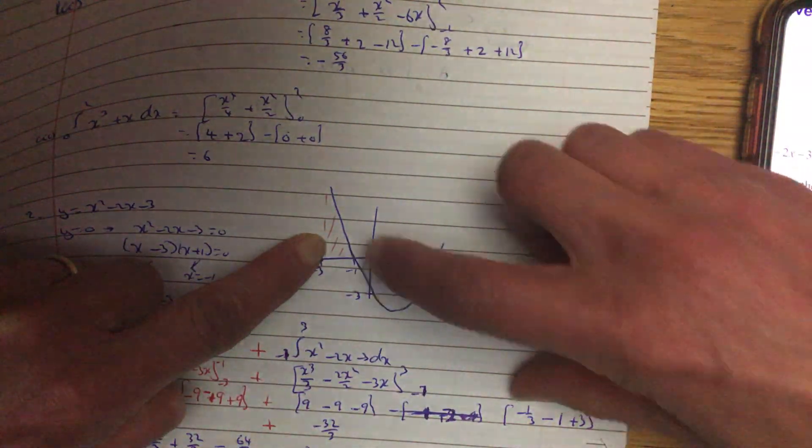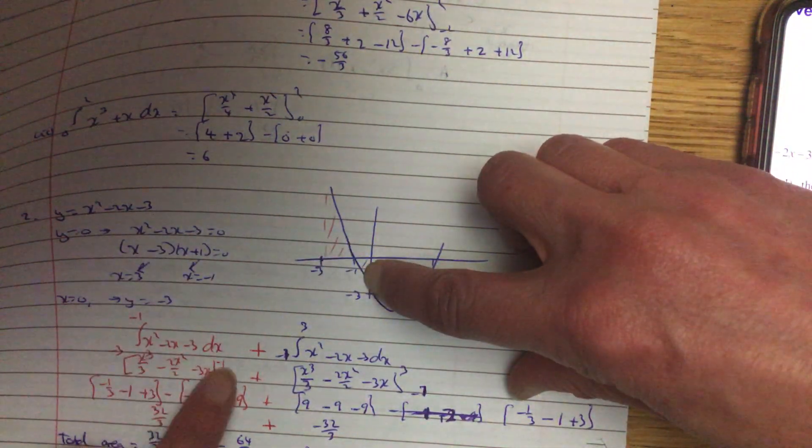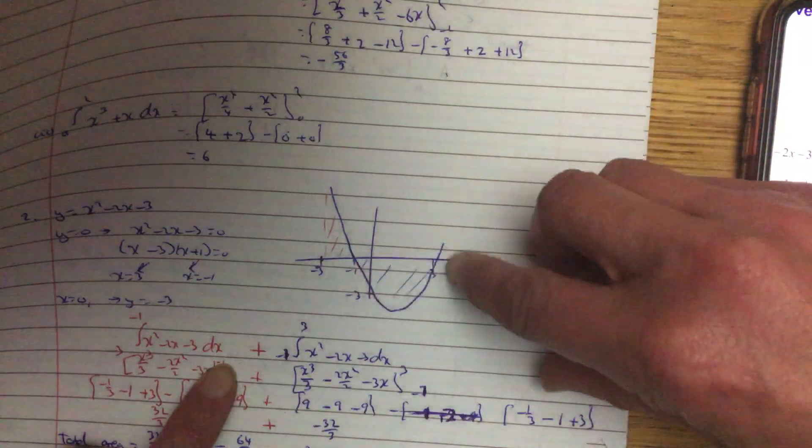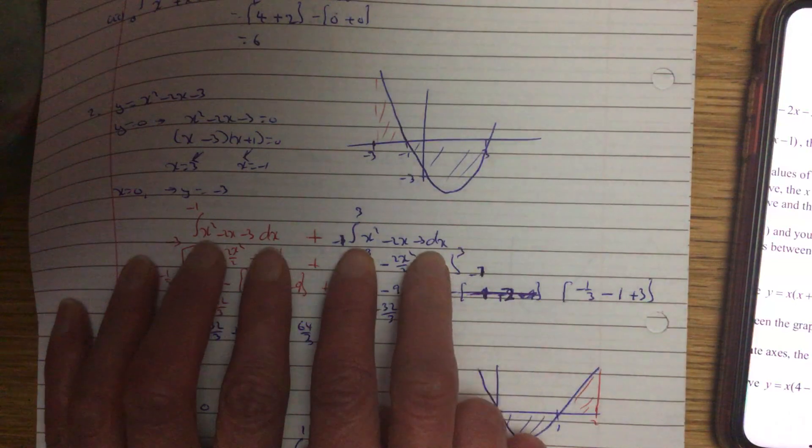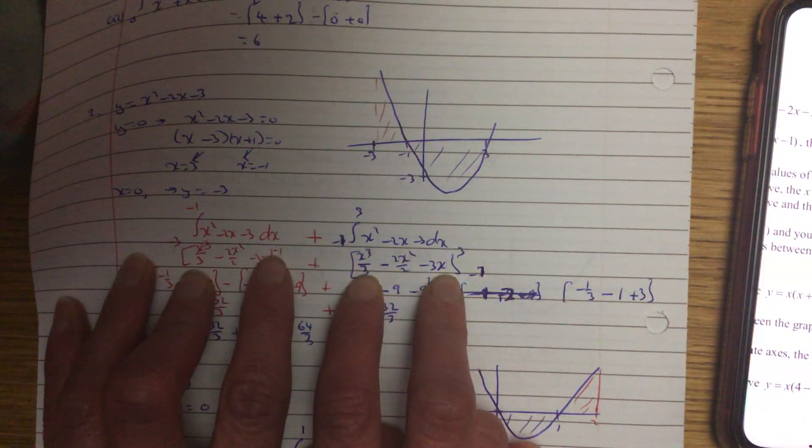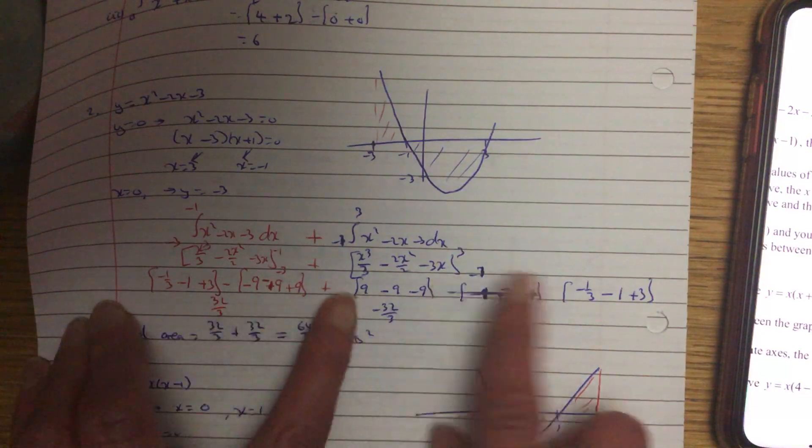So can you see two distinct areas? This one is between minus 3 and minus 1, I've done it in red, and this one is between minus 1 and 3, I've done it in blue. The process is the same for each. Integrate, sub in your upper value, sub in your lower value, work out the red, work out the blue.